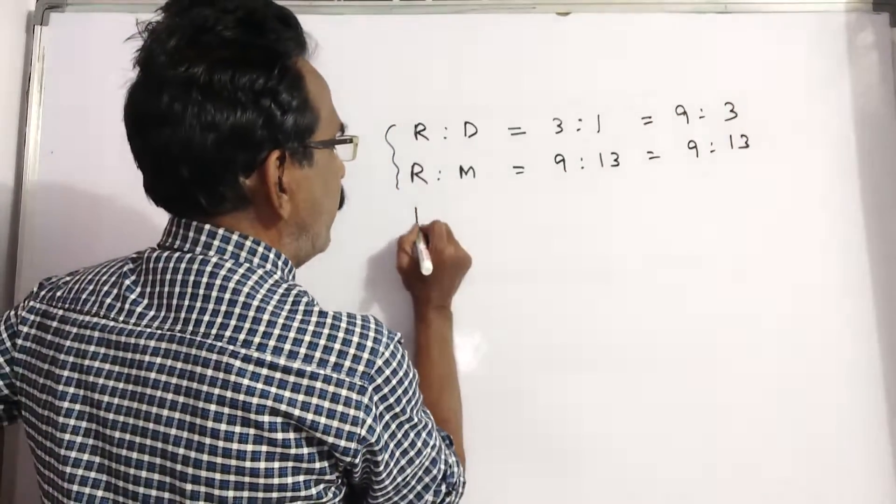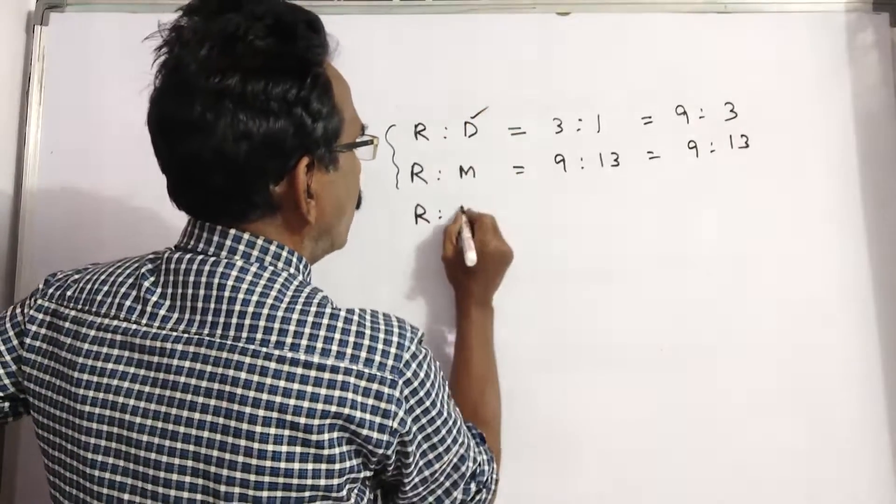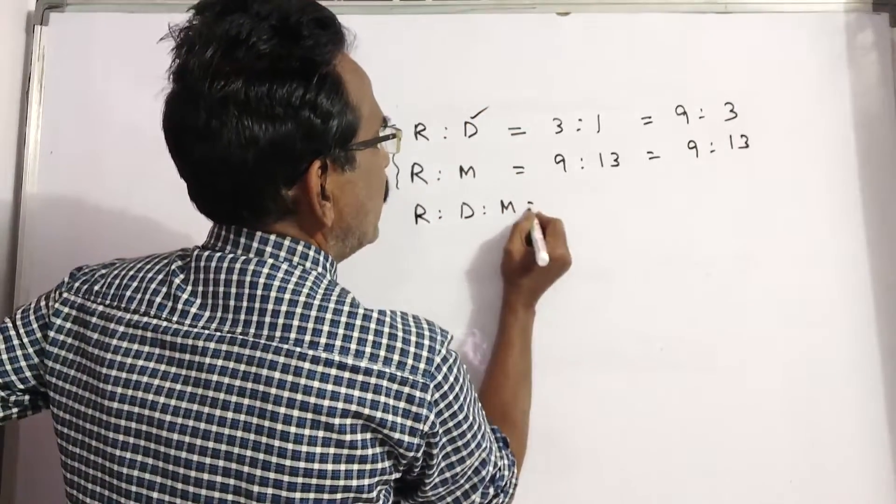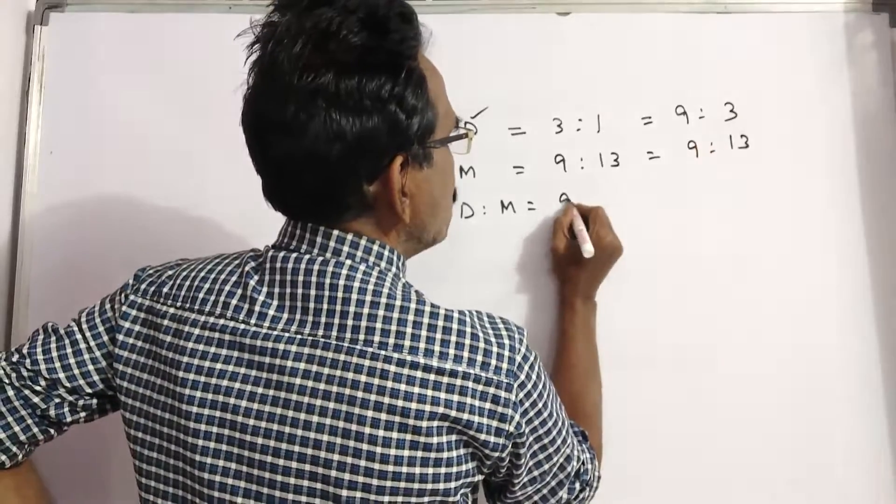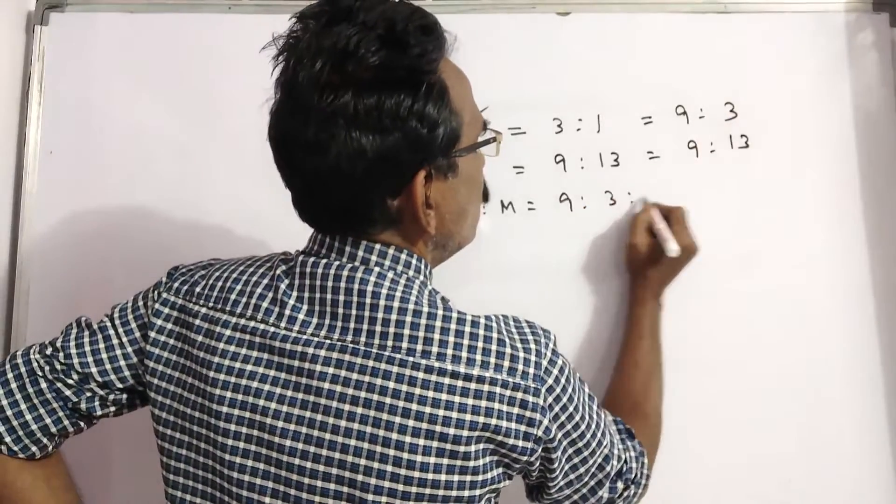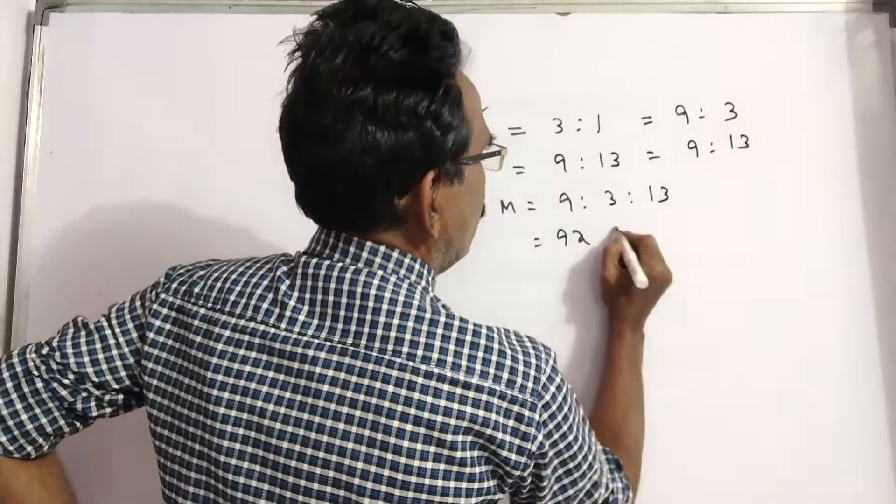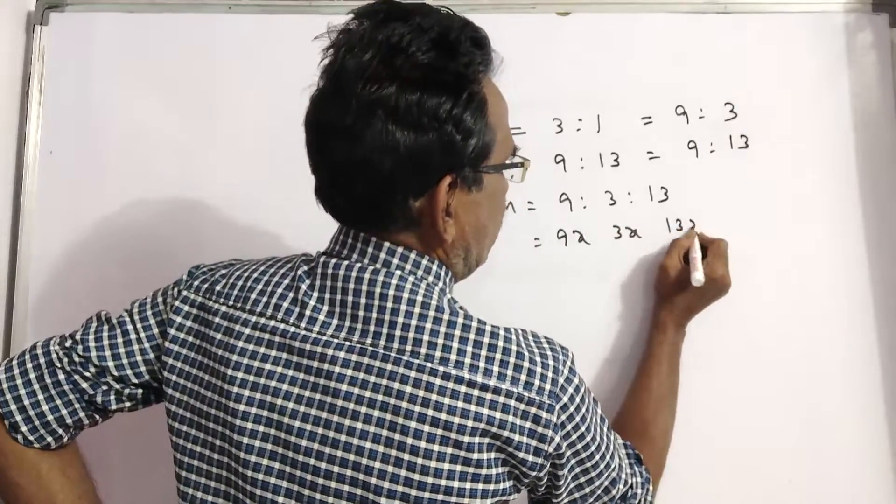Now the ratio of Raman, daughter, and mother is equal to nine is to three is to thirteen. It implies the ages are nine X, three X, thirteen X.